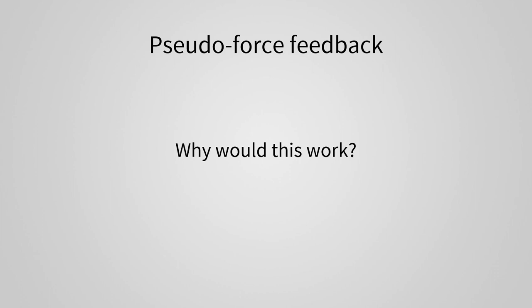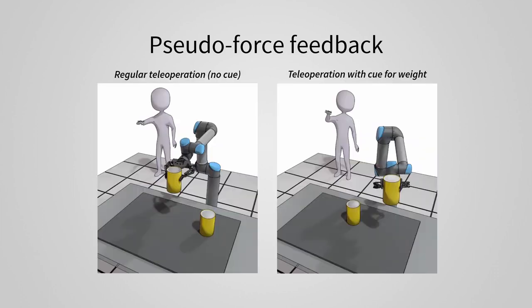Why might this work as a cue to communicate weight of objects? During teleoperation, the user receives feedback from two senses. First, the robot movement that the user sees through their visual sense. Second, the user's proprioception, which gives them a sense of where their arm is in space.